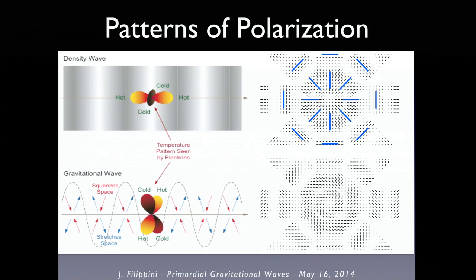Imagine many of these crisscrossing on the sky. This is the pattern around a cold spot in the CMB — many waves crisscrossing, showing a characteristic radial and circumferential, curl-free pattern. This is what we'll be looking for from density perturbations. The bottom pattern is very different: a characteristic corkscrew, pinwheel pattern. This cannot be generated by density waves due to symmetry. If you see it on large angular scales, it's a sign of tensor perturbations. That's our signature.